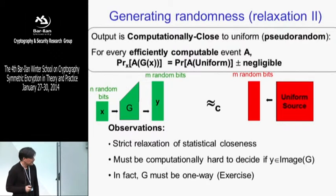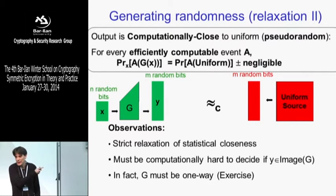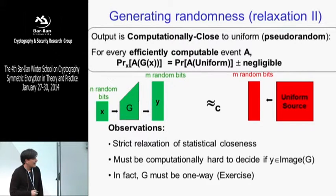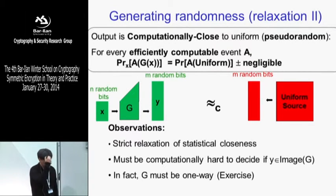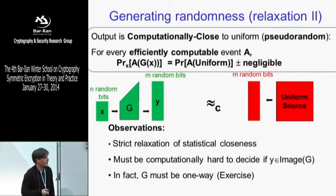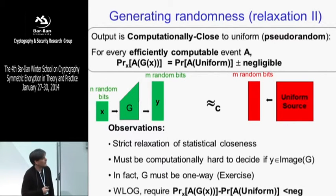Shannon showed by counting that there are many functions which don't admit an efficient realization. So I don't know that a pseudorandom generator exists, but I know this notion seems to be the right one. So computational indistinguishability is going to be our notion of a pseudo-random distribution — computationally close to a uniform distribution. Let me present an alternative definition which is perhaps less technical and more intuitive.